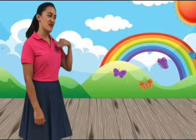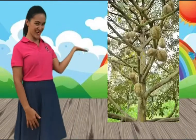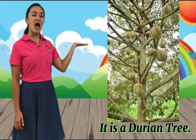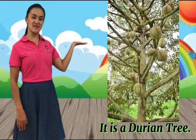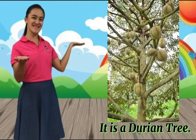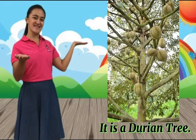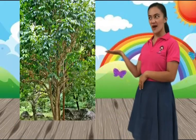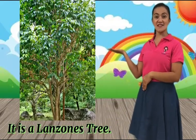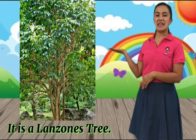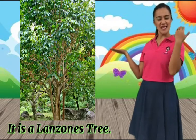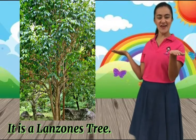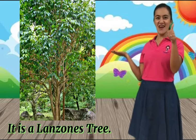Next one. How about this? What is this? A durian tree. Can you say that again? A durian tree. Good job! Next one. What is this? It's a lanzones tree. Say that again, children? Lanzones tree. Very good!